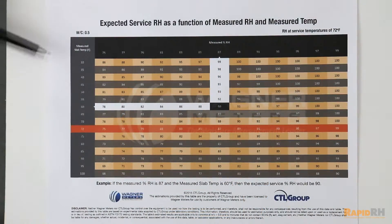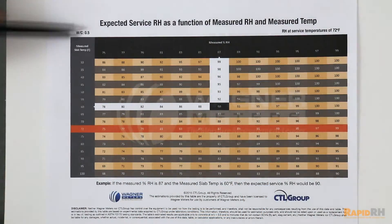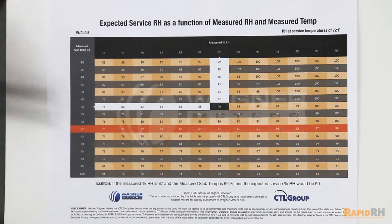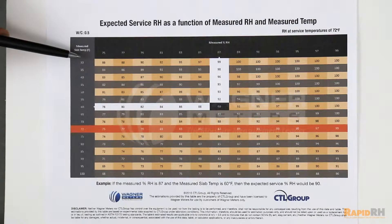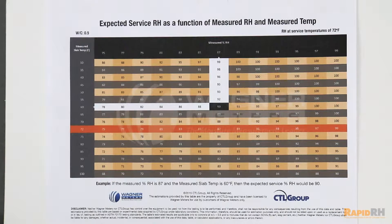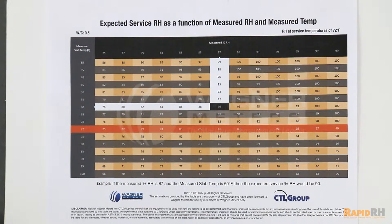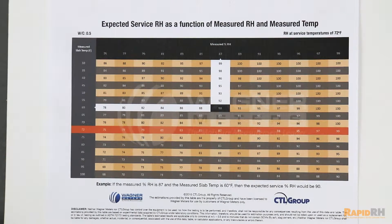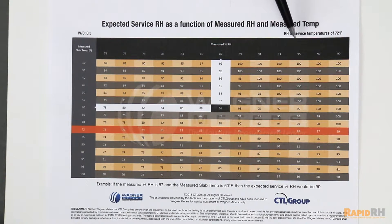This table, as you can see over here, has the measured slab temperature. And across the top here has the measured percentage RH in the slab. There are a couple of assumptions made here: one, a 0.5 water-to-cement ratio in the concrete; two, the service conditions predicted are 72 degrees Fahrenheit.